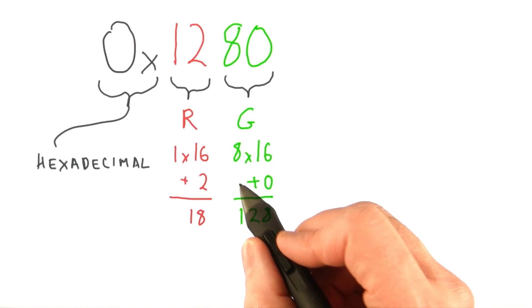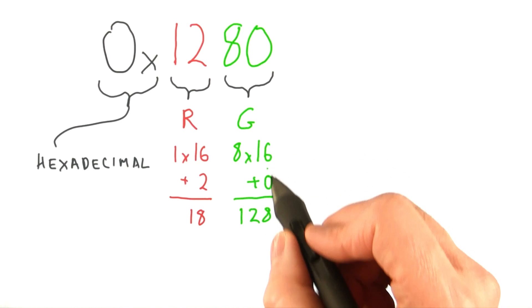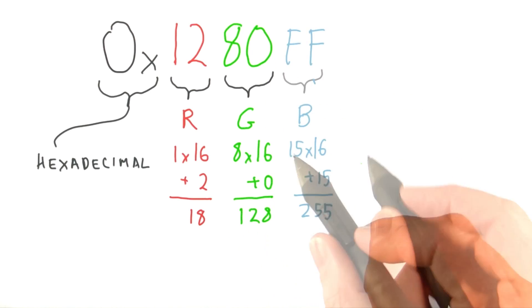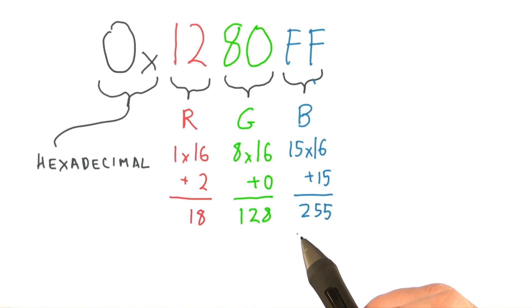Green is computed in a similar fashion. 8 times 16 plus 0 gives a level of 128. Blue is at the maximum, FF, adding up to 255.